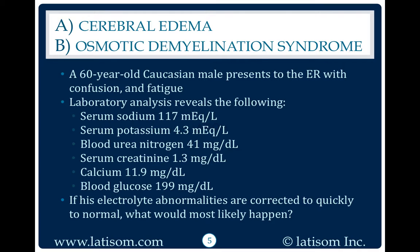Calcium 11.9 milligrams per deciliter, blood glucose 199 milligrams per deciliter. If his electrolyte abnormalities are corrected too quickly to normal, what would most likely happen? Osmotic demyelination syndrome.